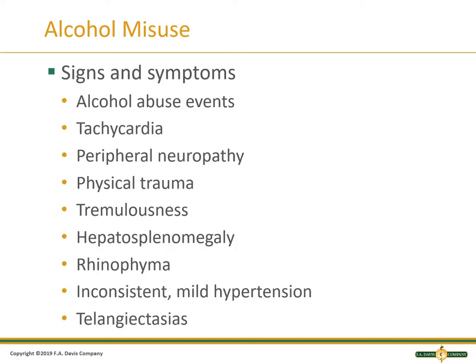Signs and symptoms of alcohol misuse include the actual abuse event — you see it. They get tachycardic, they have peripheral neuropathy in their fingers and toes. There has been physical trauma, maybe secondary to falls or a motor vehicle accident. Their liver starts to enlarge as well as their spleen, secondary to chronic alcohol use. They can have some mild hypertension because as you're drinking alcohol and your liver is trying to process everything, you're increasing peripheral resistance and vascularity, leading to vasoconstriction that can elevate blood pressure.